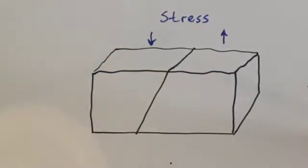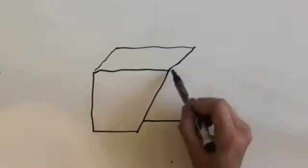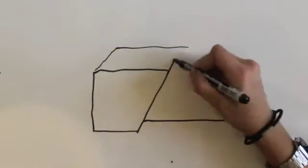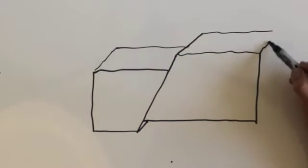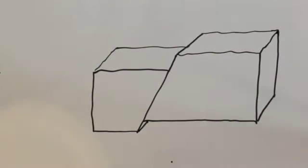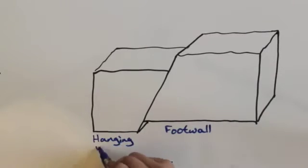The foot wall moves up, and the hanging wall moves down to accommodate the stress that is placed on the rocks. Once again, we're using a block diagram to illustrate the fault, so hopefully you'll get a chance to really understand where the fault plane is in all of this.